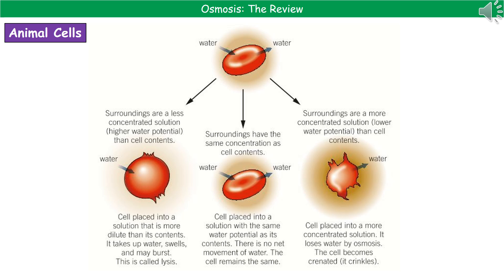On the right hand side, the last scenario is where we place red blood cells into a more concentrated solution — one with a lower water potential than inside the cell. Water moves from the cells to the surroundings, so the cells shrivel up and become what's called crenated, meaning they are all wrinkled up.